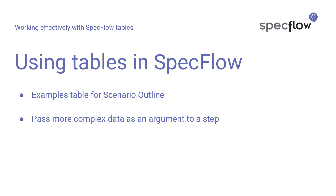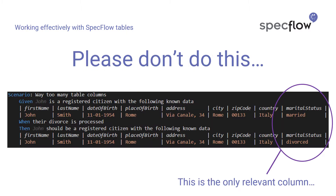Often simply passing individual parameters to your step definitions is not enough to express the behavior that you want, and you need a way to express more complex data structures in your feature files. SpecFlow allows you to pass tables as arguments to individual steps as well. Since there's no limit to the amount of table columns and rows you can pass, it might be tempting to use a lot of columns to create step definitions that are highly reusable.